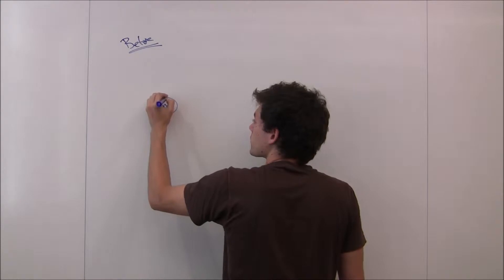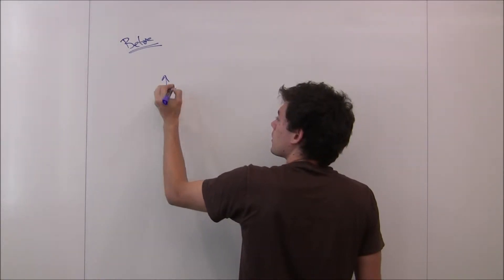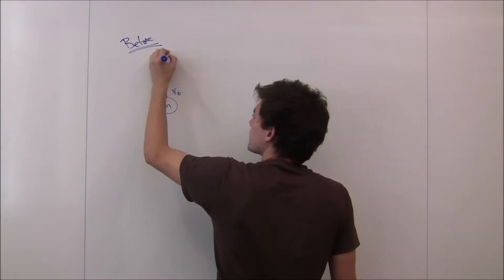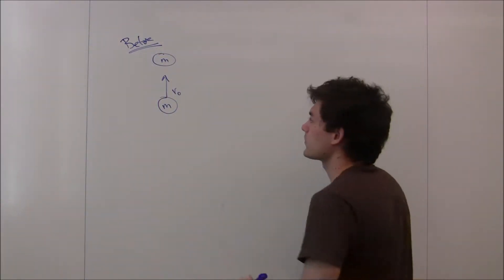So beforehand, before the collision, we have the cue ball moving up with some velocity v0, about to strike the object ball of mass m, which is stationary.